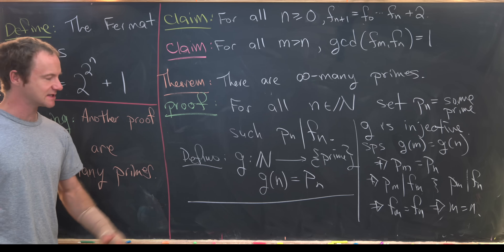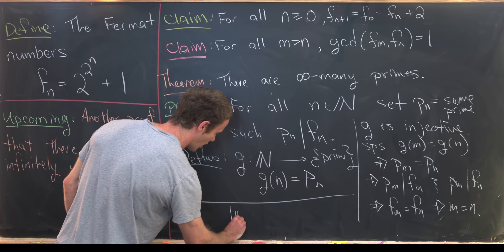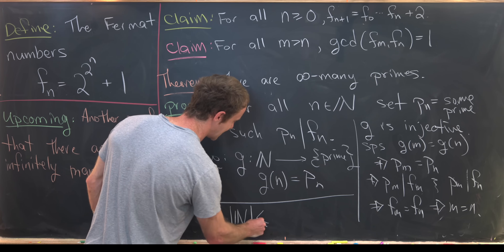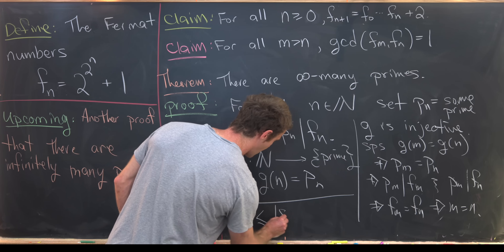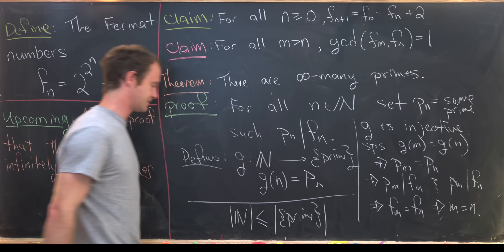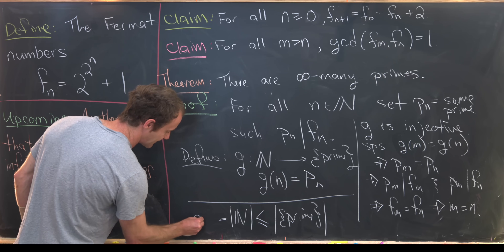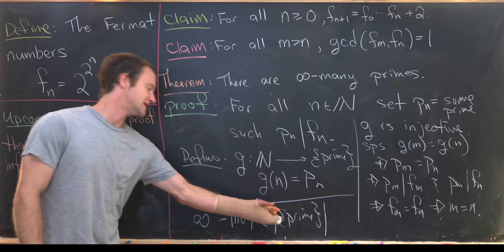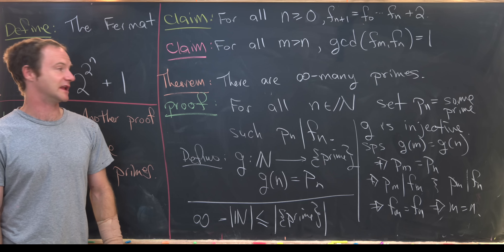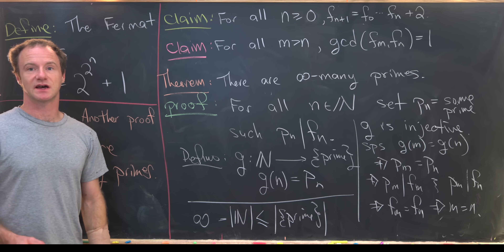Injectivity tells us that the cardinality of the natural numbers is less than or equal to the cardinality of the set of all prime numbers. Since the natural numbers are infinite, the set of prime numbers must also be infinite. That finishes the proof of this theorem.